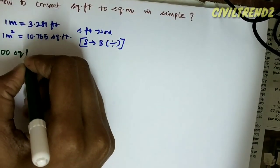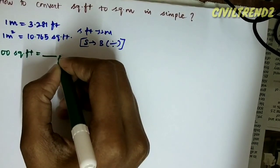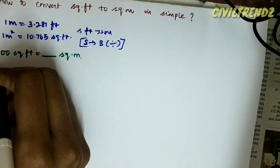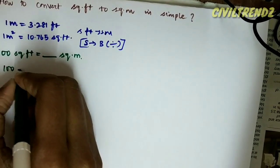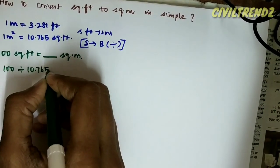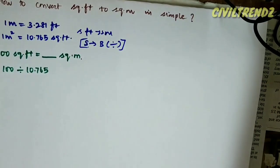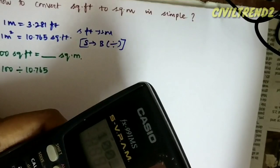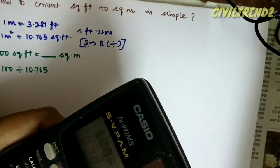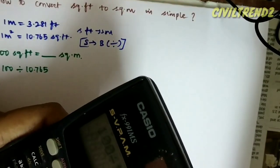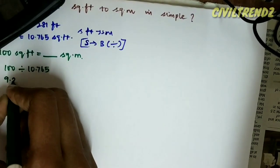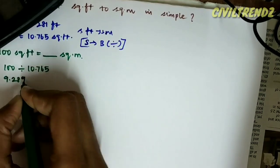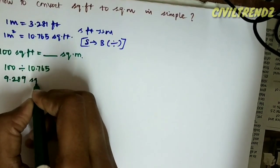100 square feet equal to how many square meter, I will convert. Find. 100 divided by 10.765 equals 9.289 square meter.